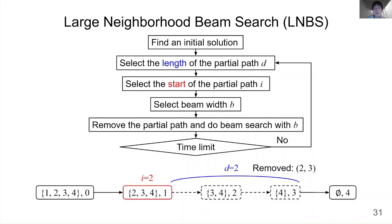Here is an overview of our algorithm, Large Neighborhood Beam Search, LNBS. LNBS first finds an initial feasible solution path. Then, LNBS removes a partial path from the solution path and searches for a better partial path using beam search. More concretely, LNBS first selects the length of the partial path to remove, D, then selects the starting point of the partial path, I. After deciding D and I, LNBS selects a beam width and performs beam search to improve the solution. LNBS repeats this procedure until reaching the time limit.